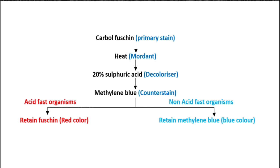Then we will do intermittent heating — that means heating 2 to 3 times until vapor arises. After that, we will not use any mordant. In acid fast staining, the primary stain itself acts as the mordant, so no mordant is added.